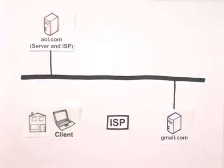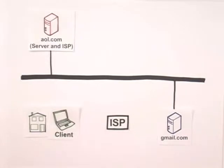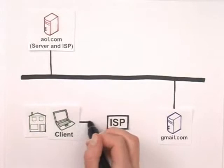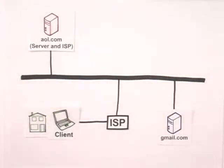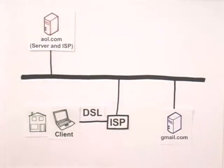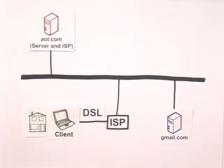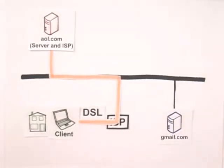So this is how it works. Your computer at home is not a server, because it's not connected directly to the Internet. Computers you and I use every day are called clients, because they're connected indirectly to the Internet through an Internet service provider. Here we'll pretend that this is my home laptop, and I'm using DSL. Now let's pretend that I want to visit AOL.com, which is coincidentally both a server and an ISP. I hop onto my laptop with DSL, go through my ISP, onto the Internet, and look at AOL.com. My computer connects with AOL.com, and I can look at its web pages.